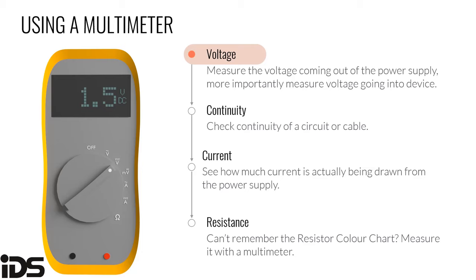Always measure voltage at the device, not just at the panel or power source. For example, you might measure 12.3 volts at the panel, but with a 50-meter run with high resistance, you could only be getting 11 volts at the keypad or detector. Cable has its own resistance per meter, and the further you run, the lower the voltage will be. Very important — always measure at the device, or you could spend a whole day troubleshooting and not realize the problem is simply insufficient voltage at the device.